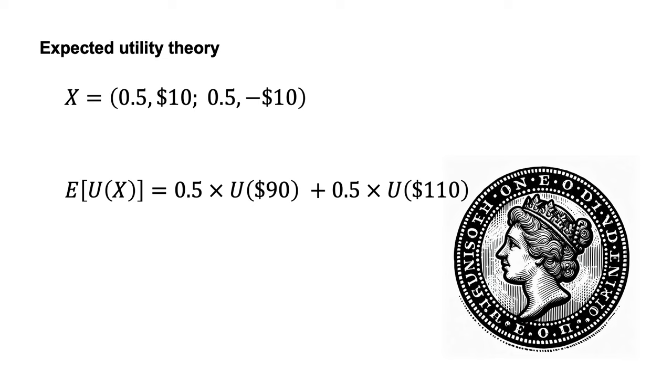Returning to our coin toss example, if our starting wealth was $100, the expected utility of the coin toss is 0.5 times the utility of $110 plus 0.5 times the utility of $90.